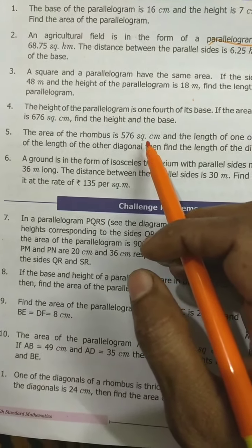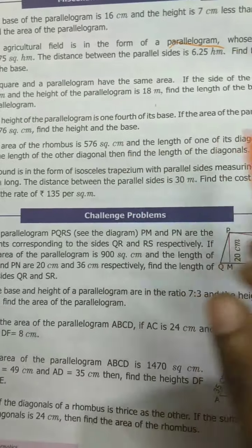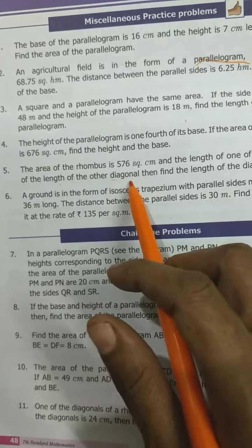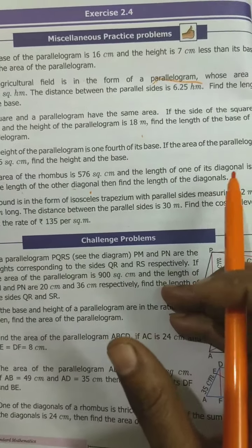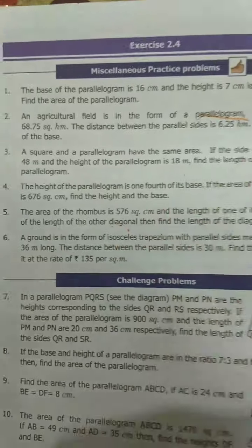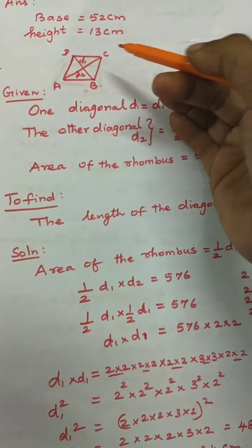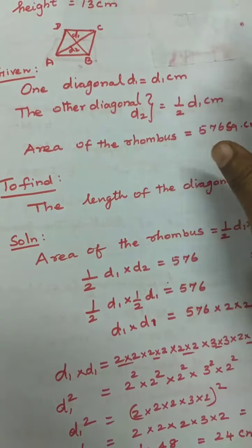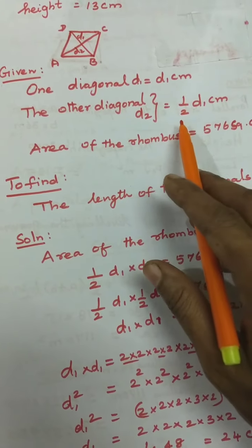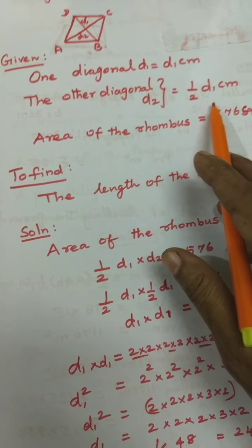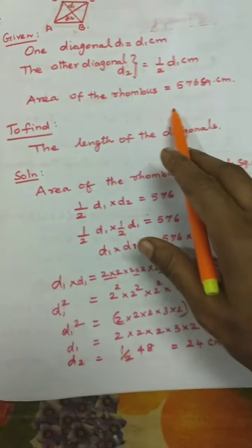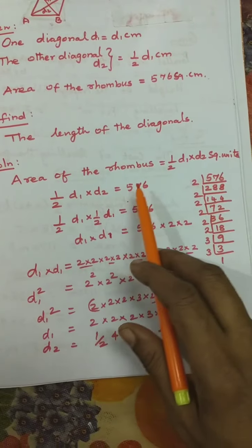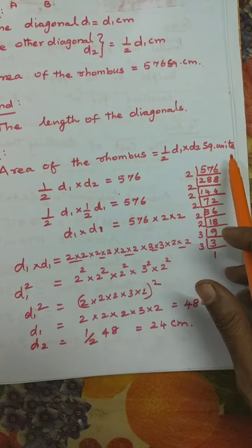The area of a rhombus is 576 square centimetres and the length of one diagonal is half the length of the other diagonal. Find the length of the diagonals. Let d1 = d1, and d2 = (1/2) d1. Area of rhombus = (1/2) × d1 × d2 = 576.